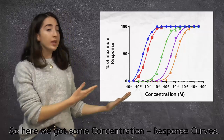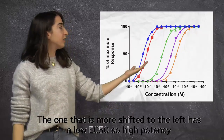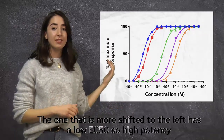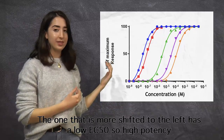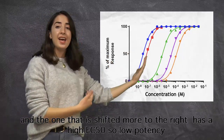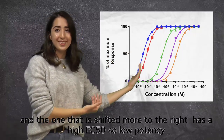Here we have some concentration-response curves. The one shifted more to the left has a lower EC50, meaning high potency, and the one shifted more to the right has a high EC50, meaning low potency.